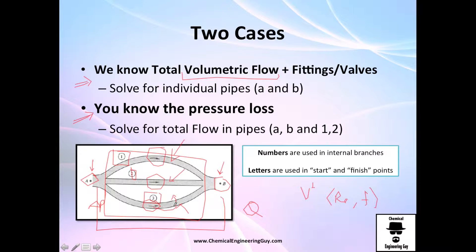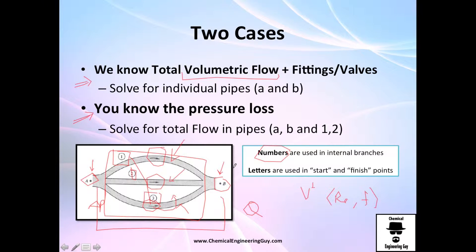Just to let you know I'm going to use this nomenclature: the numbers are for internal branches, or pipes, one, two, and three, for example these three guys right here, and the letters are used for start, for example A, and finish B.